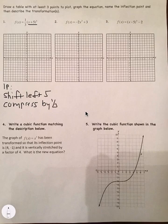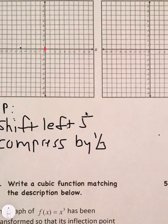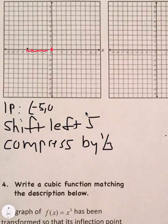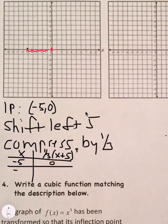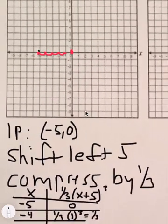Since it shifts left 5, the inflection point moves from (0, 0) to (negative 5, 0). Building a table: when x is negative 5, the expression (x plus 5) cubed equals 0, so y is 0. When x is negative 4, one-third times 1 cubed is one-third. When x is negative 3, one-third times 2 cubed equals 8 over 3, which is about 2 and two-thirds. Because it's compressed, it doesn't grow very much, and it mirrors on the other side going down.